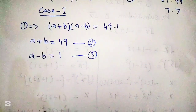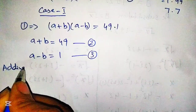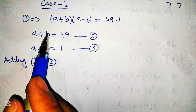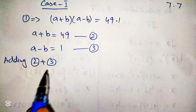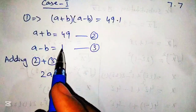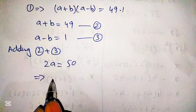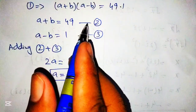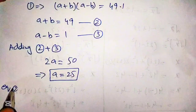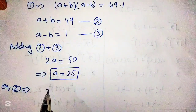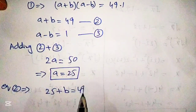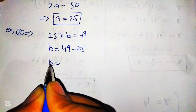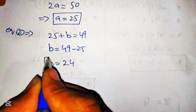Now to find the value of a and b, we add equation number 2 and equation number 3. The plus b and minus b cancel out, and a plus a becomes 2a. On the right-hand side, 49 plus 1 becomes 50, giving us a equals 25. Putting this value into equation number 2: 25 plus b equals 49, so b equals 49 minus 25, and b equals 24.